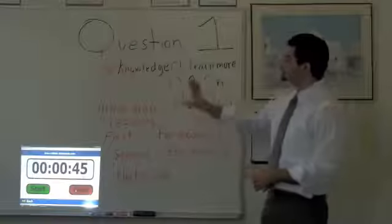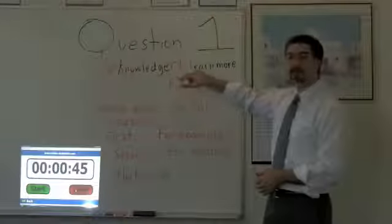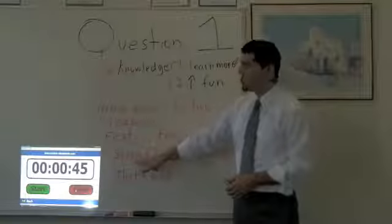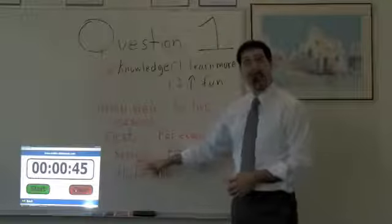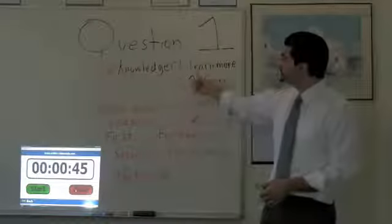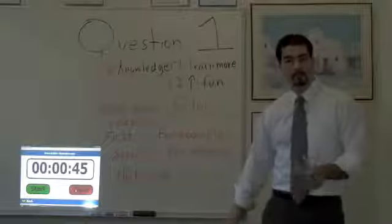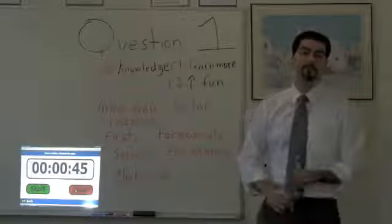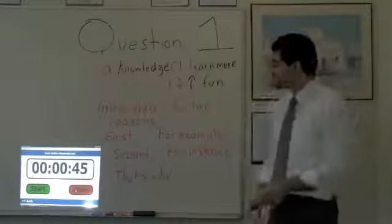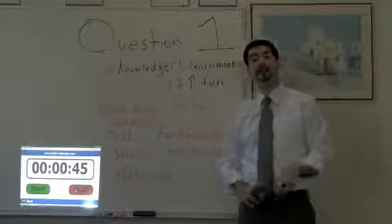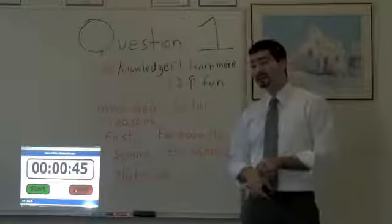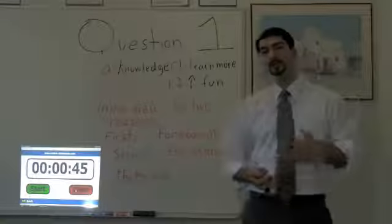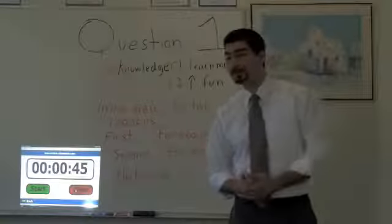One of the things that I want to address is sometimes we're only able to come up with one reason. If that's the case, just give two examples. So instead of saying second, you'll say on the other hand and make the second example opposite. So let's say I only came up with learn more. What I would say is, first you learn more. For example, my professor knew a lot, I learned a lot. On the other hand, maybe I'll say something like in high school, my math professor didn't know a lot, so I didn't learn a lot. That's why. It's always better to come up with two reasons, but if you only come up with one, that's the way you want to deal with it.